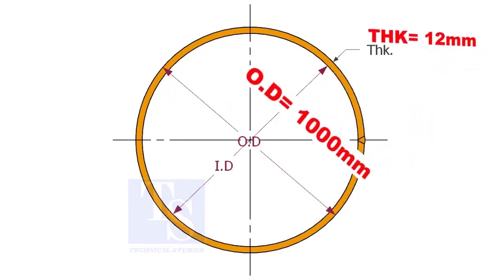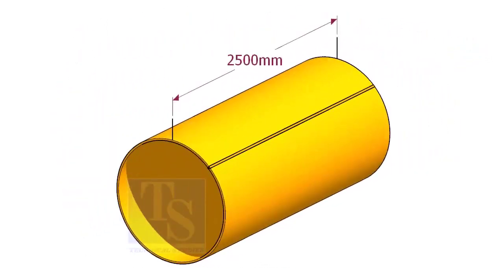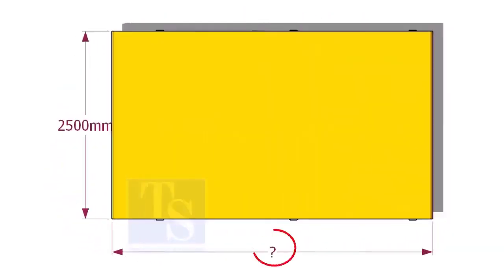Assume that we need a pipe with an inside diameter of 1000 mm and thickness is 12 mm, and the length of the pipe 2500 mm. What will be the length of the plate?